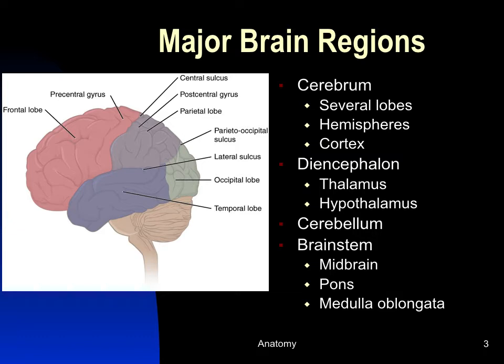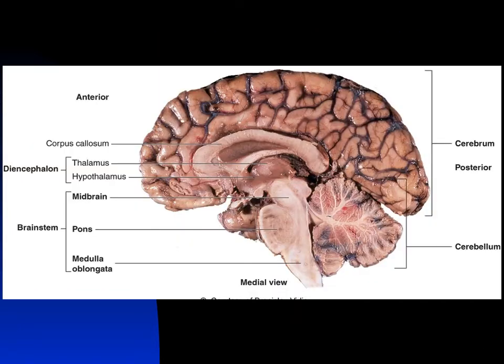The cerebral cortex completely covers most of the brain. Underneath is the diencephalon, which divides into the thalamus and hypothalamus. The cerebellum is partially hidden under the temporal and occipital lobes. The rest of the brain stem — midbrain and pons — is mostly hidden, but you can see the medulla oblongata, which connects the brain to the spinal cord.